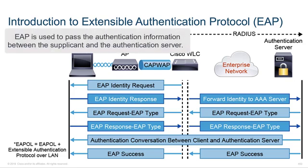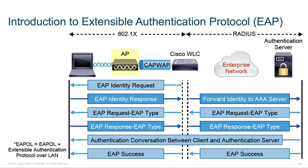Extensible Authentication Protocol, or EAP, is used to pass the authentication information between the supplicant — the workstation — and the authentication server. EAP handles and defines the authentication process. The access point acts as an authenticator, and only as a proxy to allow the supplicant and the authentication server to communicate.